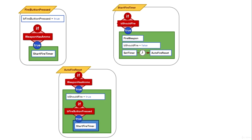So here are the three functions. When the fire button is pressed, we check if we have ammo and then we start fire timer, which checks if we should fire and then fires the weapon, sets the boolean to false, and starts the timer. During this waiting time, B should fire is false. At the end of the time, auto fire reset gets called — we check to see if we have ammo, we set B should fire back to true, and we check to see if we're still holding the fire button, in which case we call start fire timer again. So we have this loop that will happen as long as we're holding the button down and we still have ammo.